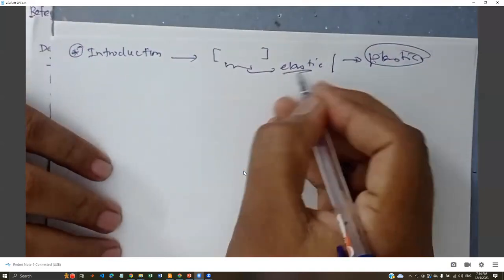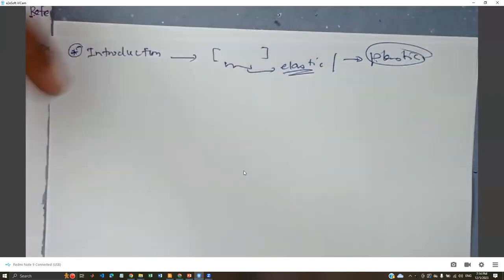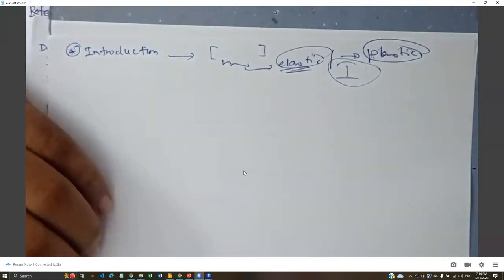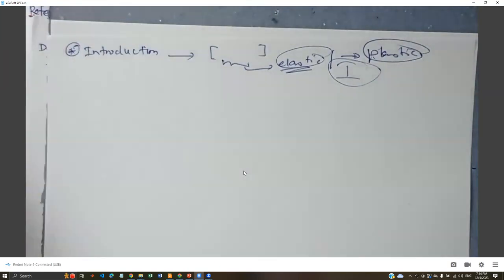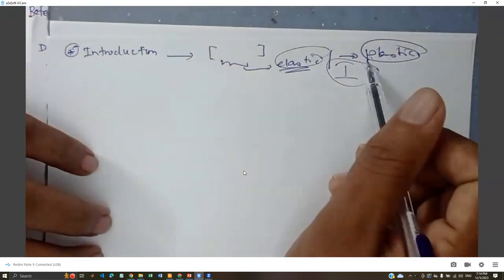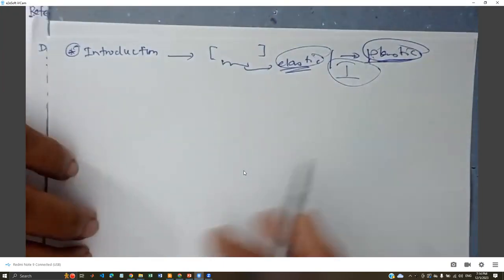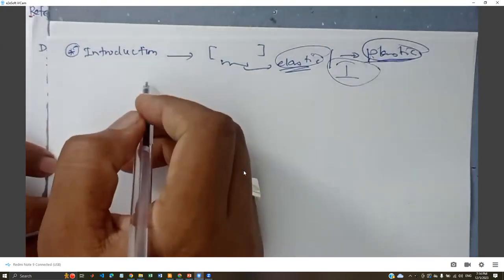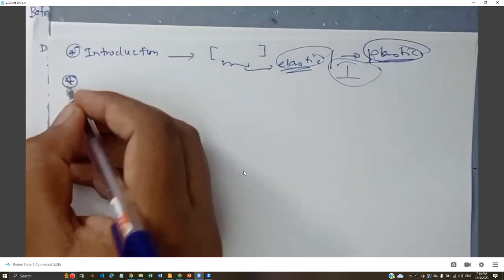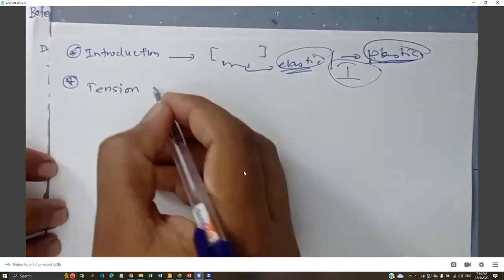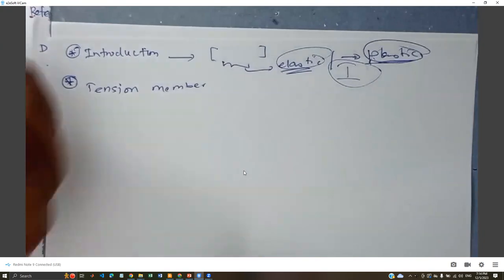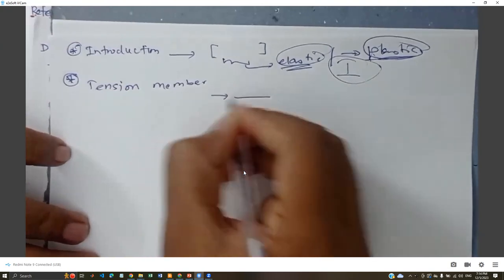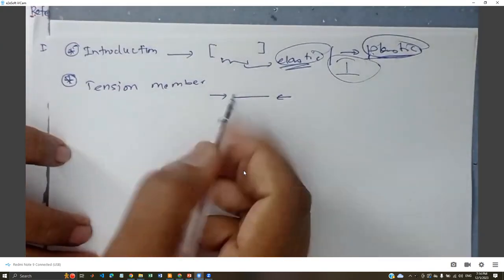If we stay only in the elastic region, when we have a huge load we'd need to provide huge sections, which is not economical. So we go a little into the plastic region. After the introduction, the second part was the tension member — please understand what tension and compression members mean and how their behaviors work.